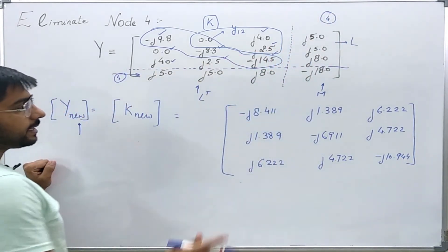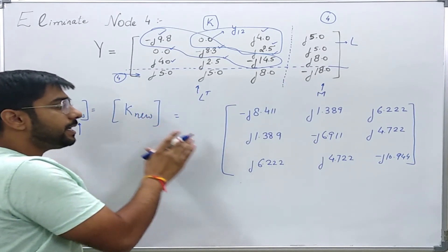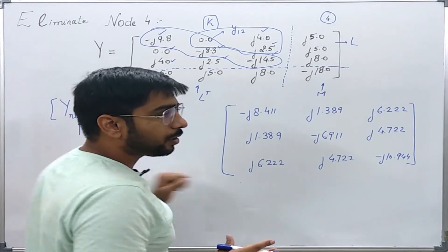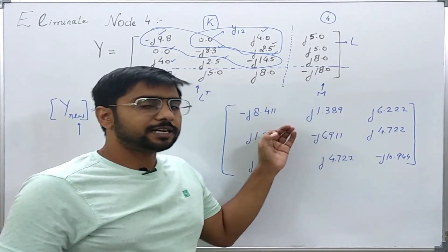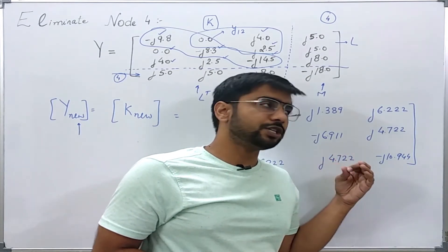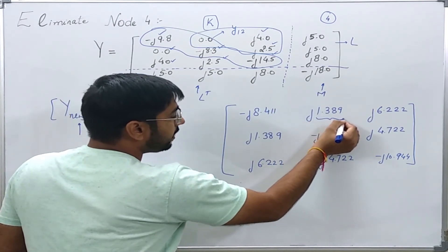You see that by repeated use of the formula, I can easily eliminate any node. And the calculations, although large in number, are not that tough. They are very easy. You see that the resultant matrix is still symmetric.